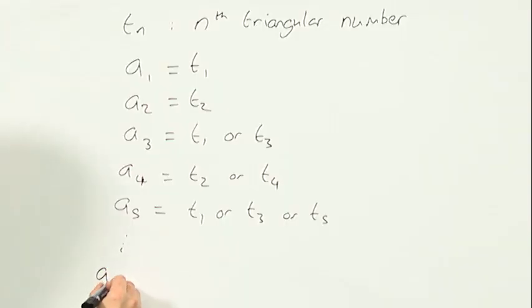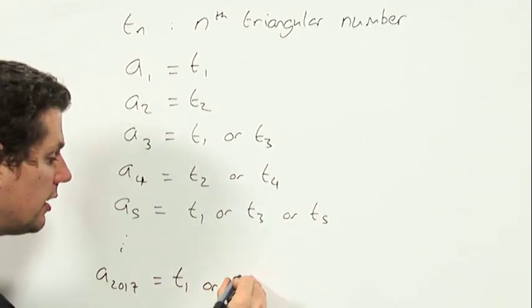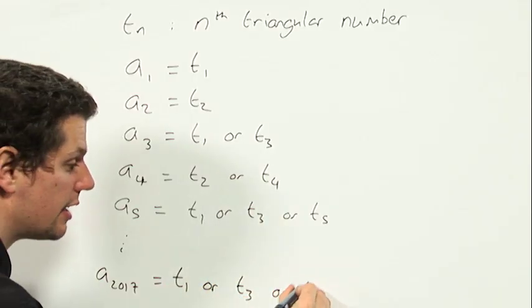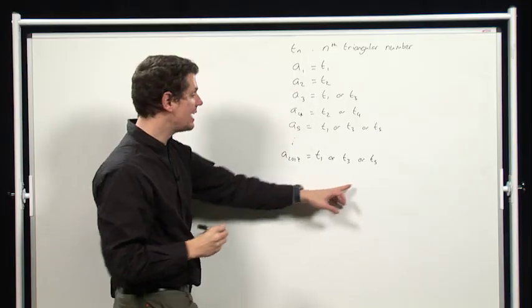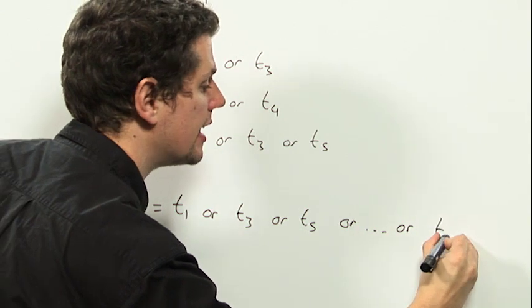When we get to A2017, we're going to find that that can be T1 or T3 or T5 or, in fact, any odd numbered T up to T2017.